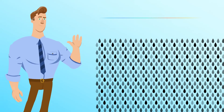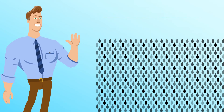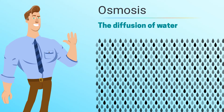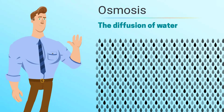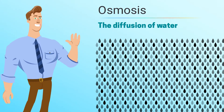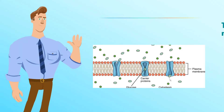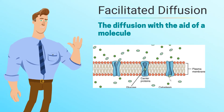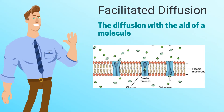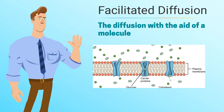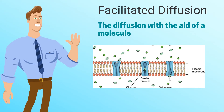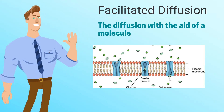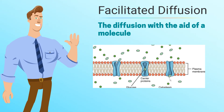When water moves by diffusion, it is called osmosis. There is another type of diffusion called facilitated diffusion, in which another molecule aids the movement of molecules from high to low concentration.